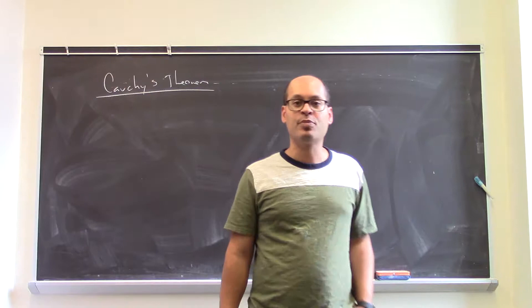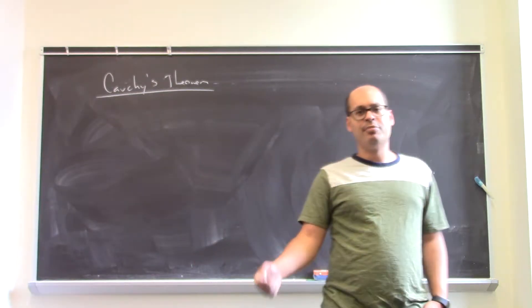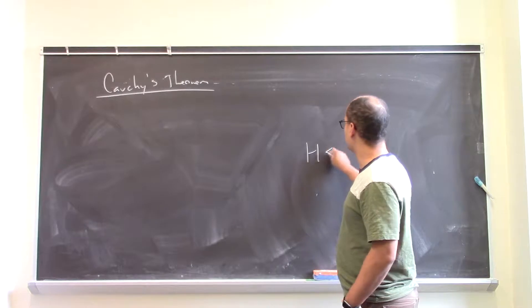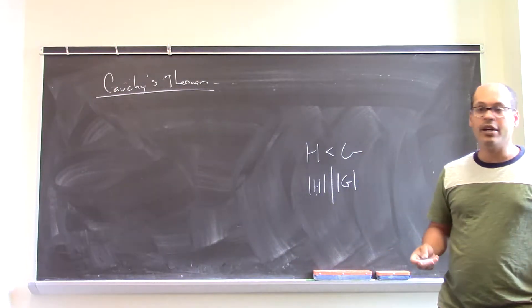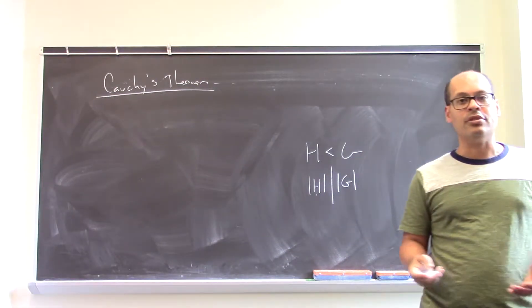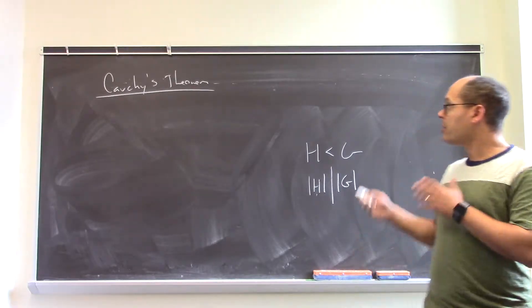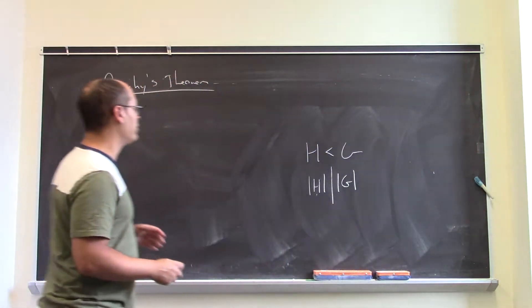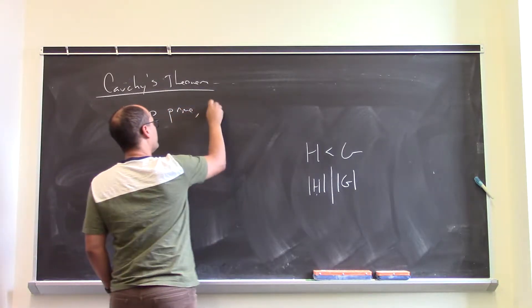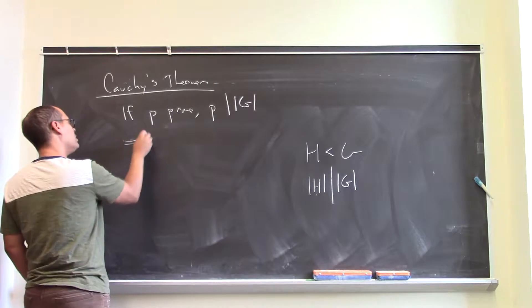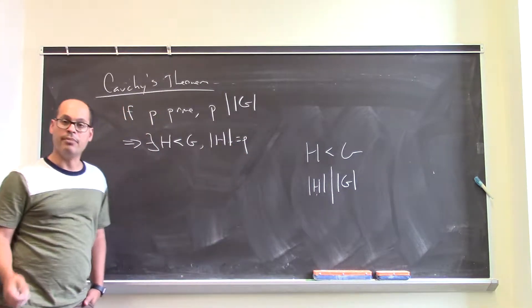The first fun thing you can do with the class equation is prove Cauchy's theorem. What is Cauchy's theorem? Recall Lagrange's theorem: whenever you have a subgroup of a finite group, the order of the subgroup divides the order of the group. The converse is famously not true — you might have a number dividing the order of the group but no subgroup of that size. Cauchy's theorem gives a weaker converse: if p is prime and p divides the order of a finite group, then there exists a subgroup whose order is p.